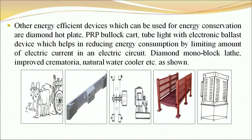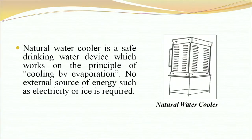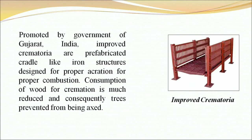Other energy efficient devices used for energy conservation include diamond hot plate, PRP bullock card, tube lights with electronic ballast — a device that reduces energy consumption by limiting the amount of electric current in a circuit — diamond mono block, and water cooler. A natural water cooler is a safe drinking water device that works on the principle of cooling by evaporation, requiring no external energy such as electricity or ice. Improved crematoria, promoted by the government of Gujarat, are prefabricated cradle-like iron structures designed for proper combustion, greatly reducing wood consumption.